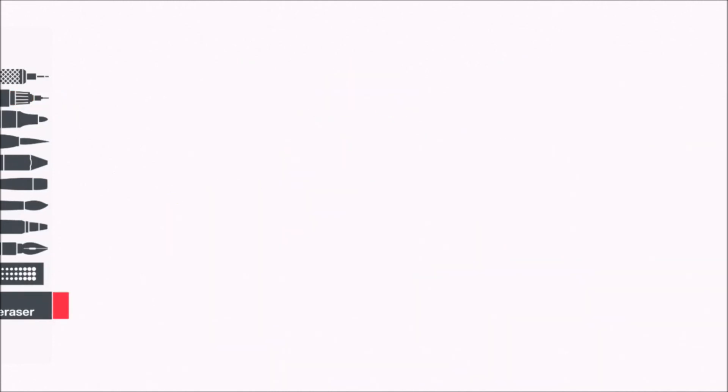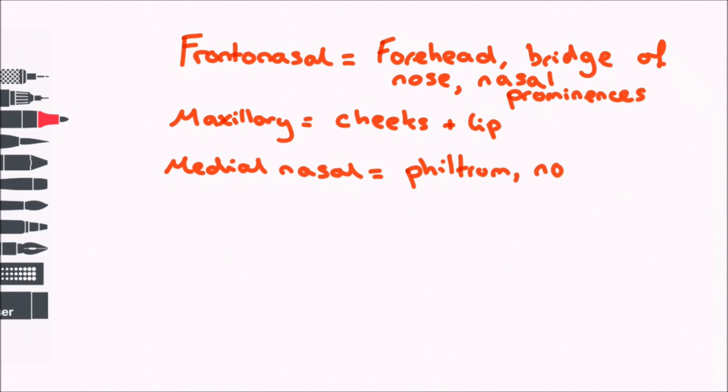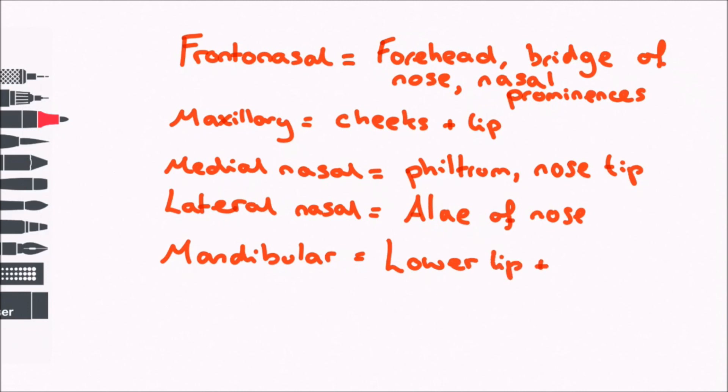Let's review what forms what. The frontonasal prominence forms the forehead, bridge of the nose and medial and lateral nasal prominences. The two maxillary processes form the cheeks and the lateral portion of the upper lip. The medial nasal prominence forms the philtrum of the upper lip and the tip of the nose. The lateral nasal prominence forms the alae of the nose. The mandibular process forms the lower lip and the jaw.